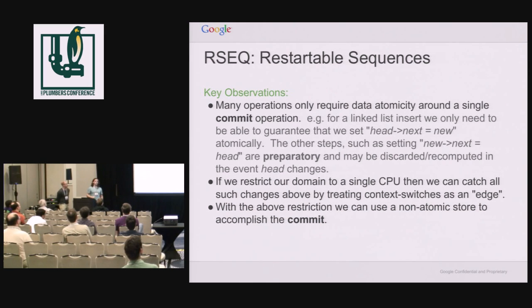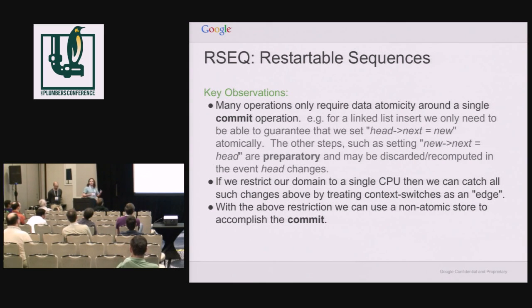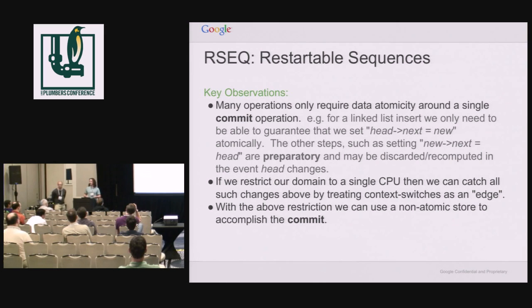It turns out that you can do a wide variety of things based around a single updating instruction. You may do a lot of preparation or setup work around it, but the actual change that's visible to anybody else is only a single write to a single word. So you have to figure out what the current head is and set your next pointer, but to enqueue, all you have to do is slam the head with whatever your node is. You just have to figure out how to make sure that the context switch and all other bad things get noticed and move essentially around that one commit edge. And if you do that, it turns out you don't actually need atomics to add a new commit.